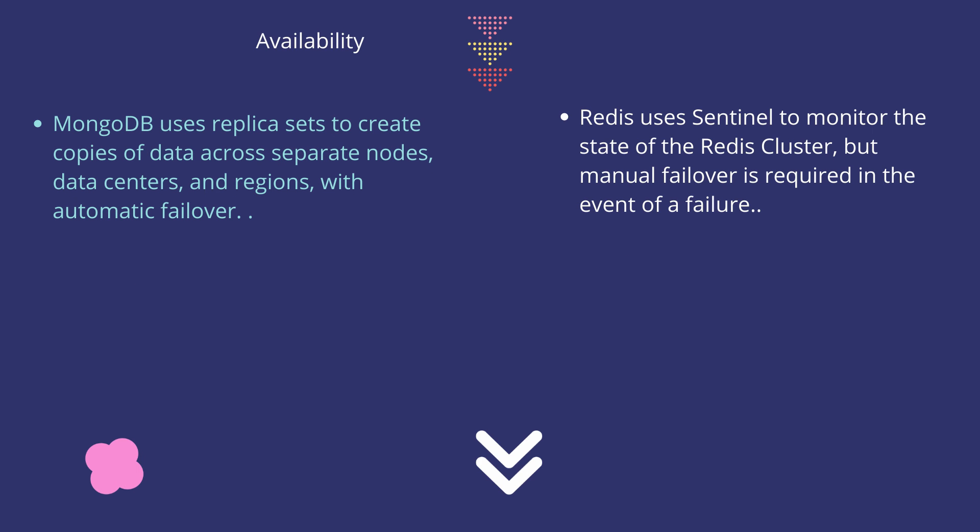MongoDB uses replica sets to create copies of data across separate nodes, data centers, and regions with an automatic failover option. On the other hand, Redis uses Sentinel to monitor the state of the Redis cluster, but manual failover is required in the event of a failure.